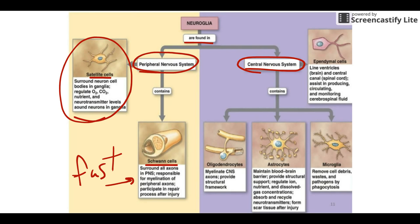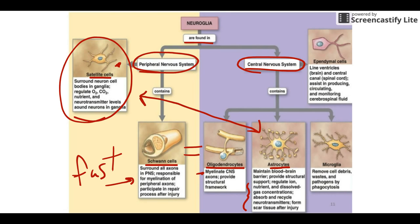In the central nervous system, we have pretty much the exact same cells. Oligodendrocytes do the exact same thing as Schwann cells — they make myelin. Schwann cells and oligodendrocytes are essentially equal; they're just found in two different places: Schwann cells in the peripheral nervous system and oligodendrocytes in the central. Similarly, the satellite cells from the peripheral nervous system have a counterpart in the central nervous system called astrocytes. They get their name because they're kind of star-shaped, and they maintain gases, nutrients, and waste around neurons just like satellite cells do.